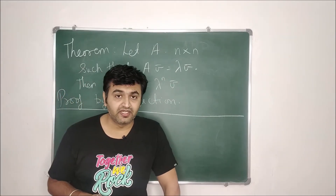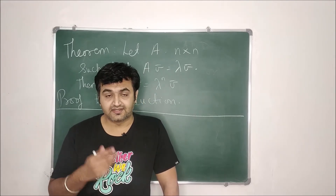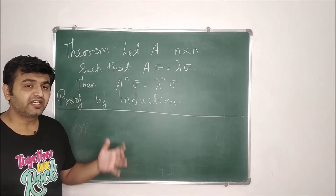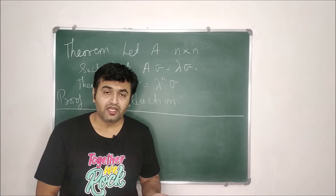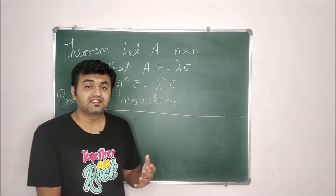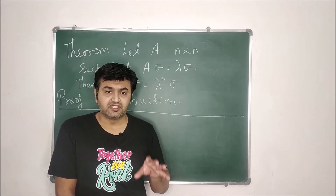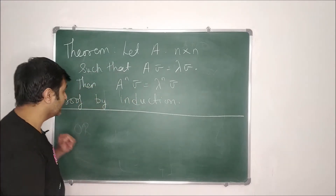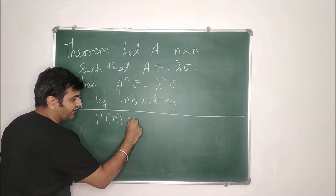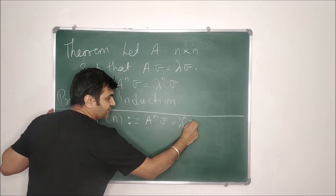So whenever you take a power of a matrix, eigenvectors remain the same whereas the eigenvalue gets multiplied by that power. Since this statement involves a natural number n, we prove it using induction — one of the best tools for proving statements indexed by natural numbers. Let P(n) be the statement: A^n·V̄ = λ^n·V̄.